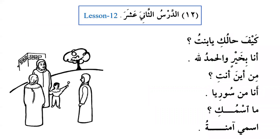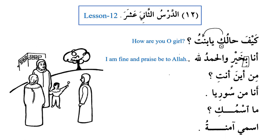Ad-darsu al-thani ashara — lesson number 12. Kaif haaluki ya bintu — 'How are you, oh girl?' — we are addressing the girl, so we use the feminine form haaluki. She says: Ana bi khayrin wa al-hamdulillah — 'I am doing fine, and praise be to Allah.' Note the use of the preposition B here; it is a very important preposition when responding to Kaif haaluk.